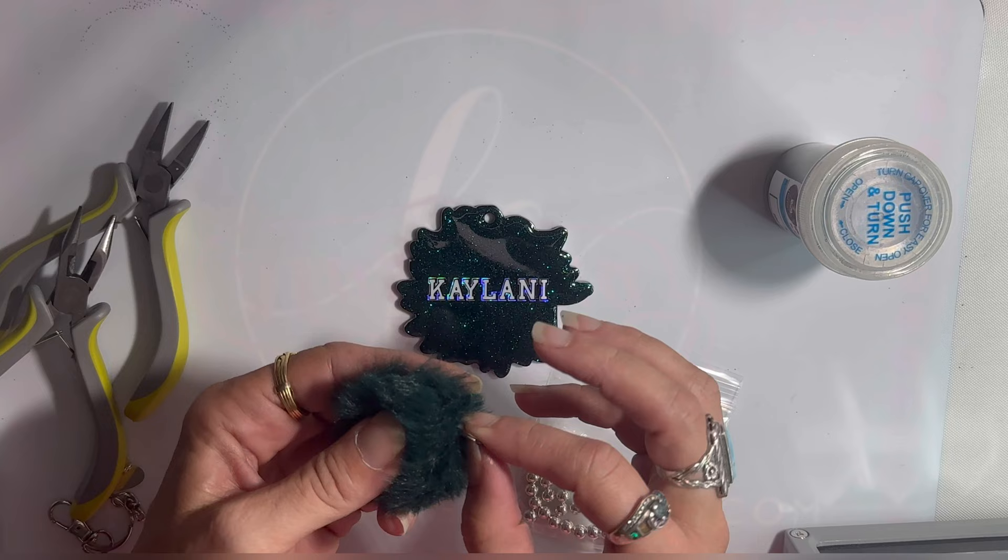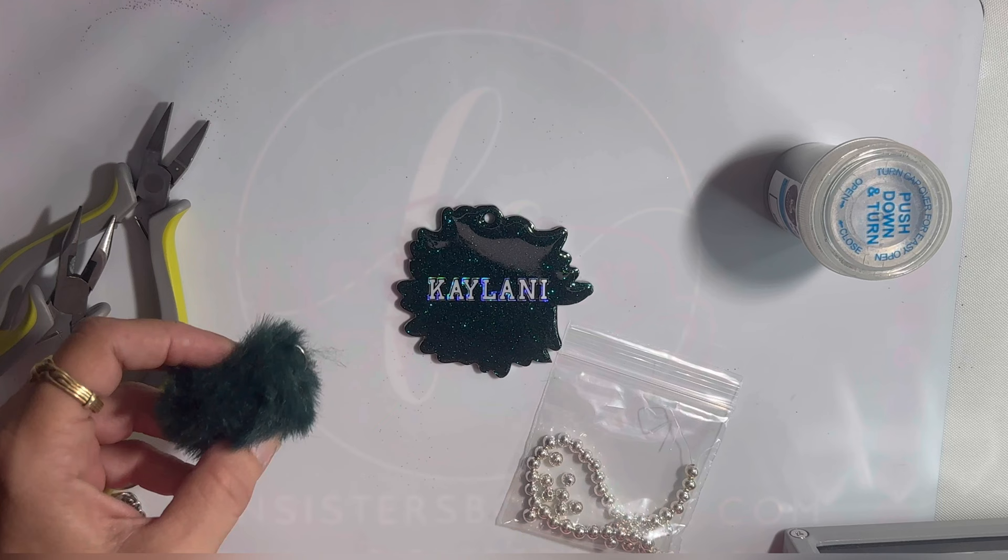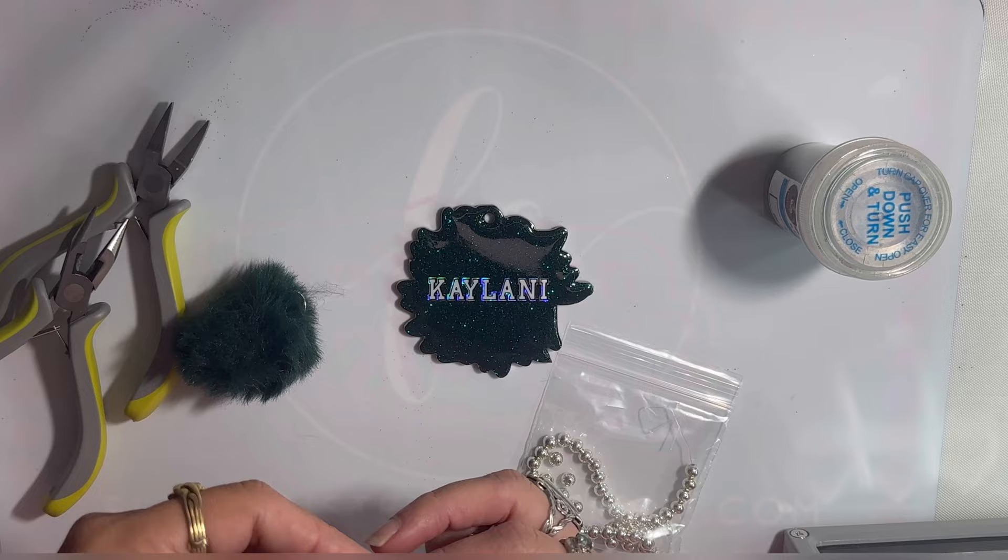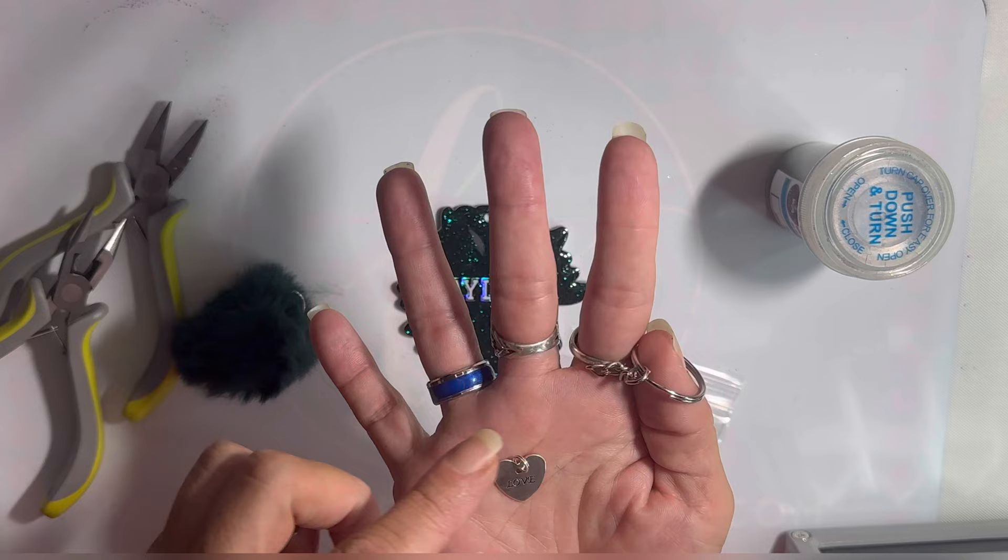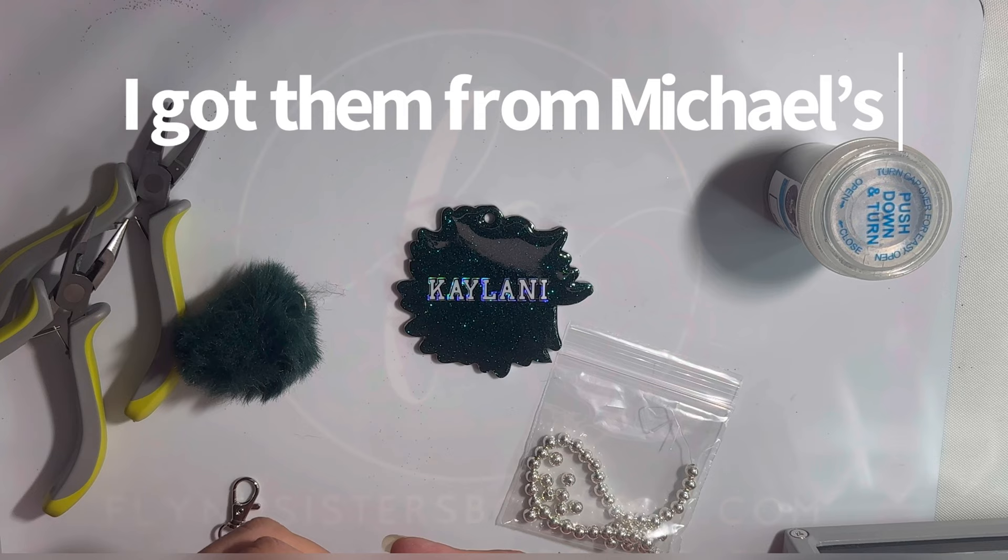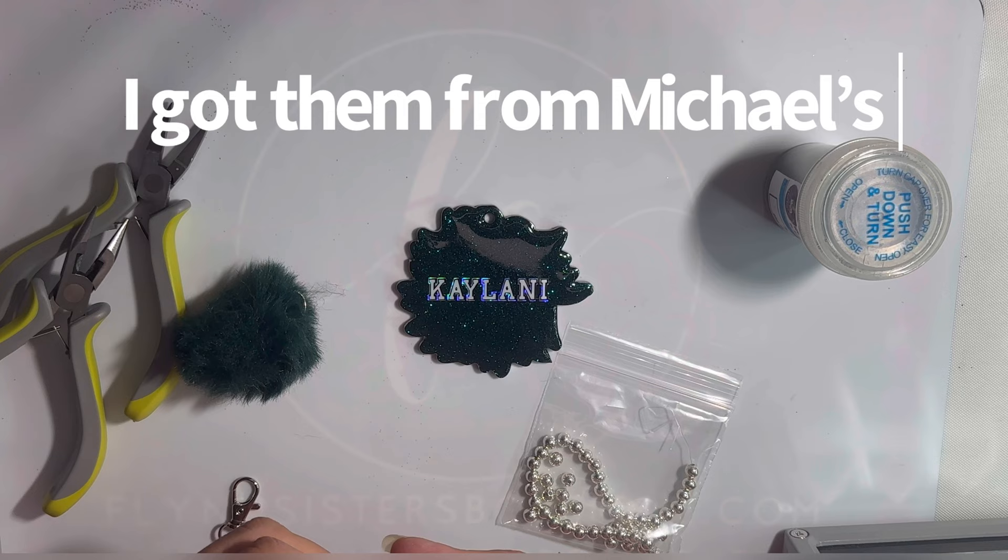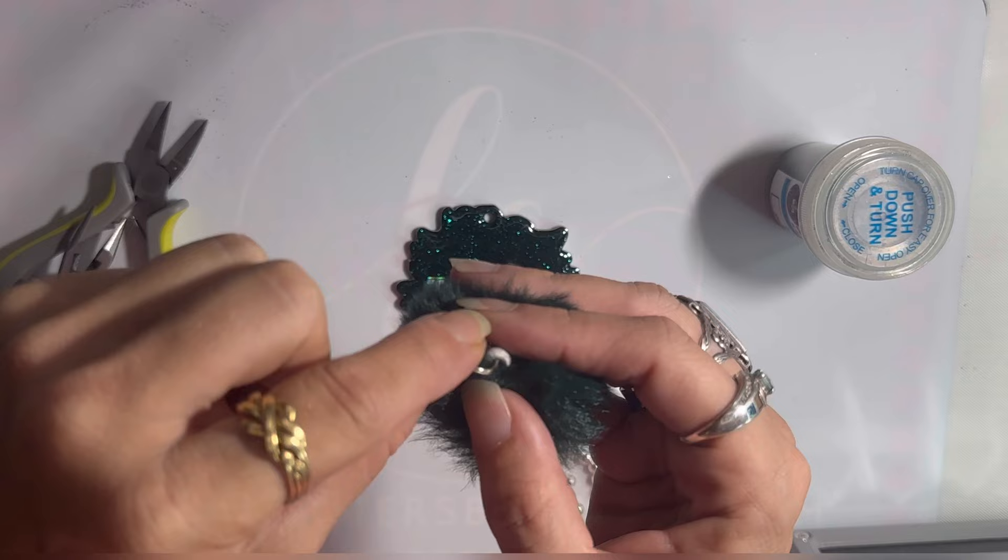I have these little pom-poms that I got off of Amazon like a year and a half ago. I'm going to use this little heart charm here that I purchased. In 2016 my daughter got married. They were on some bubbles for her wedding.